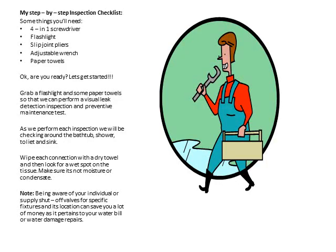My step-by-step inspection checklist — some things you'll need: a 4-in-1 screwdriver, a flashlight, slip joint pliers, adjustable wrench, and paper towels. Are you ready? Let's get started. Grab your flashlight and some paper towels so that we can perform a visual leak detection inspection and preventive maintenance tests.